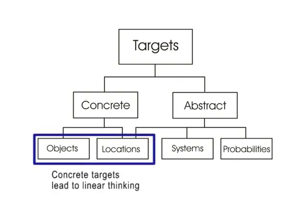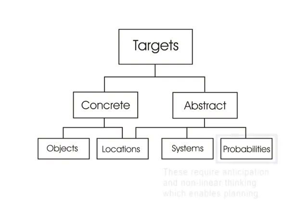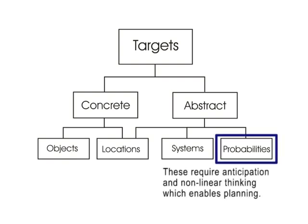As targets, objects in concrete locations are entities — they represent what is, or was, and not what might be. Probabilities require anticipation, a concern with future states. Seeing targets accurately and quickly as what might be is a key in rapid decision making.